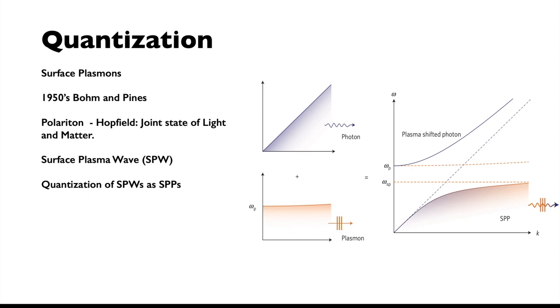Bohm and Pines in the 1950s laid the foundation for quantizing plasma waves in metals, which resulted in the quantized form of collective matter oscillations, the plasmons, which were found to be bosons behaving both as a particle and a wave. Hopfield then introduced the polariton, a joint state of light and matter, providing a quantum model for the polarization field describing the response of matter to light.